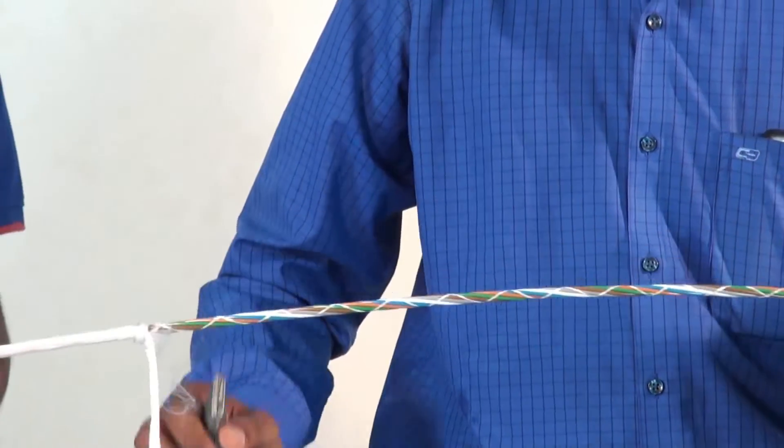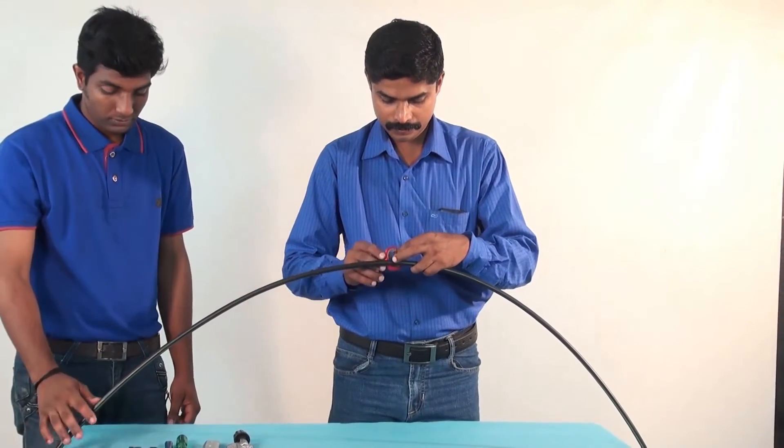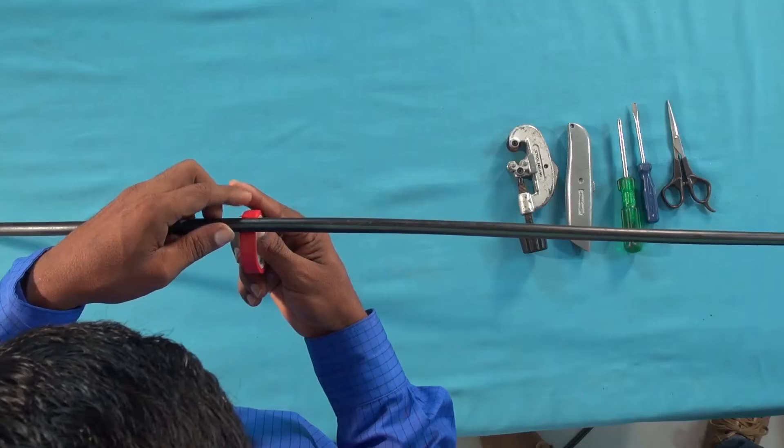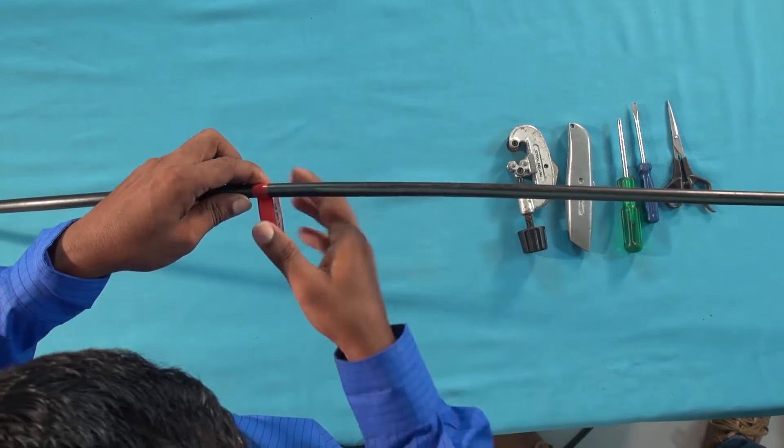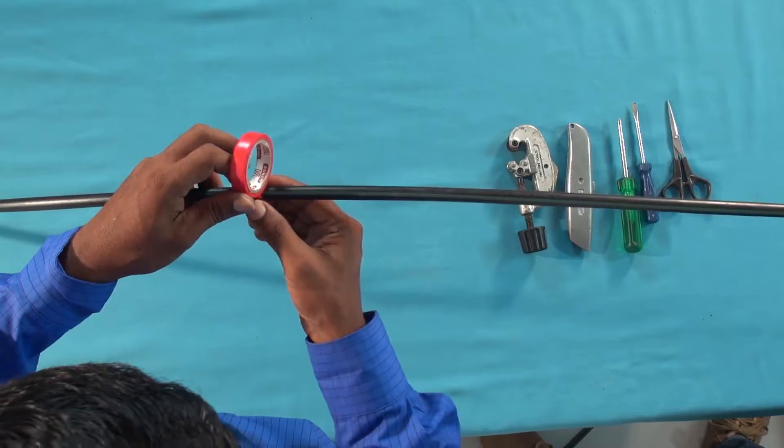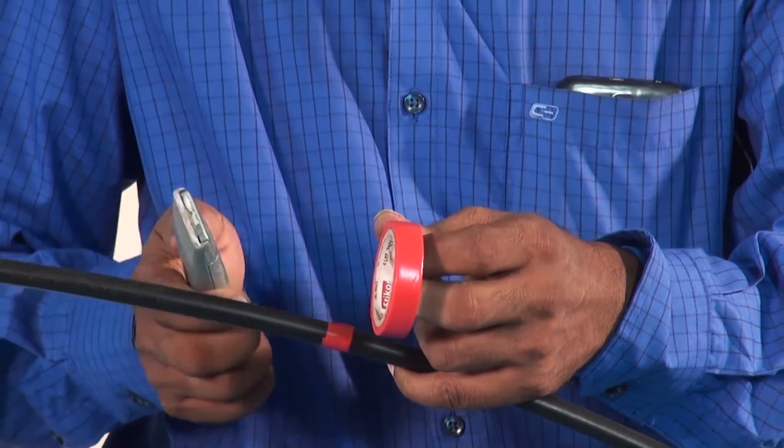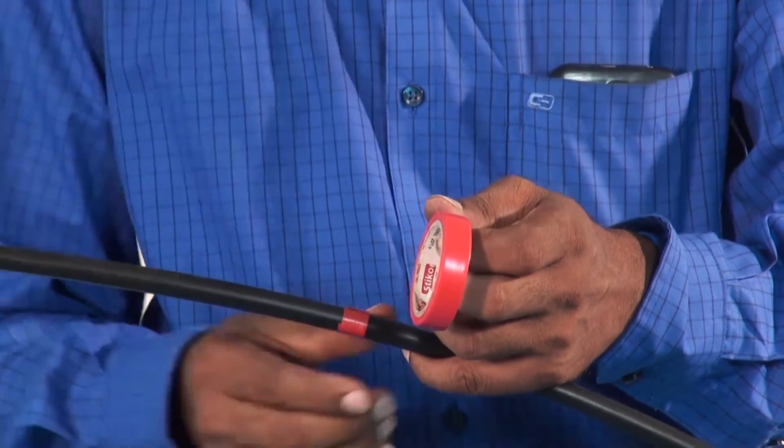Now let us start the loose fiber cable preparation. Stick an insulation tape around the cable at a distance of 1.5 meter from the end of the cable. Cut the insulation tape with the utility knife.